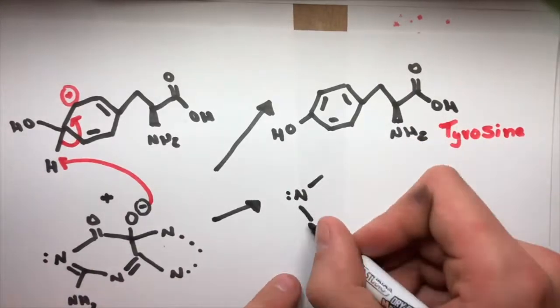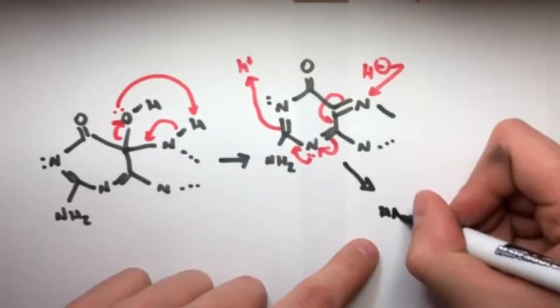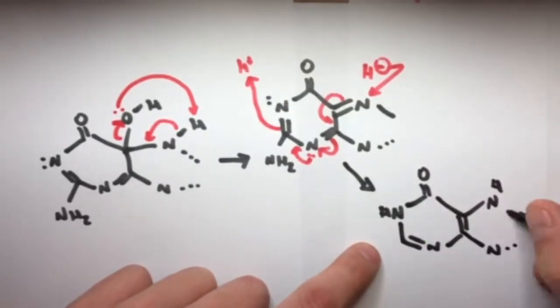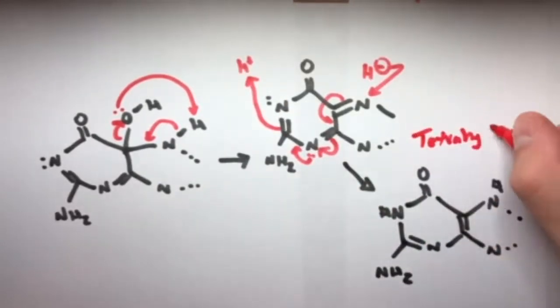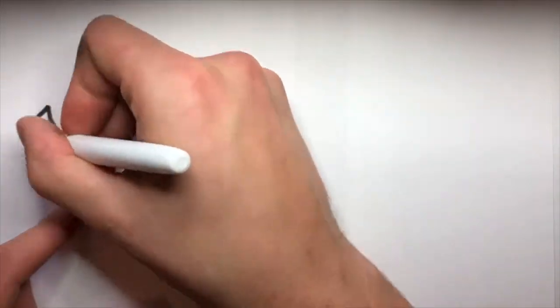The product of this reaction is tyrosine, and the other byproduct, known as carbonylamine tetrahydrobiopterin, can be reduced by NADH to the original tetrahydrobiopterin to be recycled in the next step of this reaction.